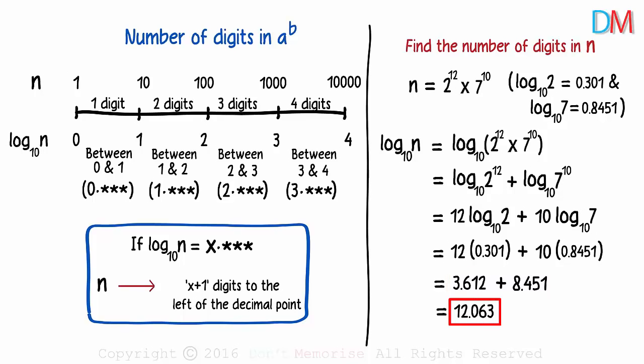This is the log value of this number n. But is that what we are asked for? Not really. We are asked for the number of digits in the number n. And the rule we just looked at said that, if the logarithm to the base 10 value is of the form x point something, then the number of digits in the number will be x plus 1. As the number x is 12 here, the number n will have 13 digits before the decimal point.